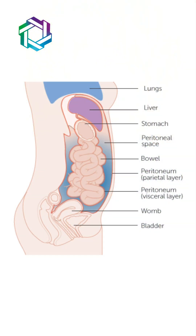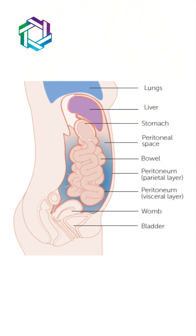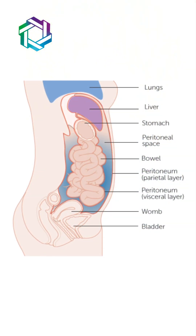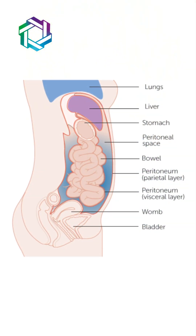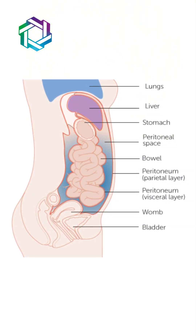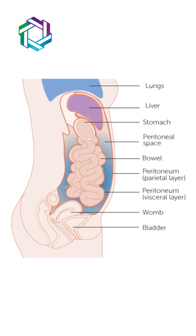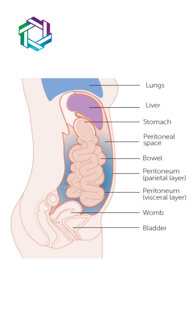If you look at the abdominal cavity, it is one whole cavity starting from the diaphragm to the pelvis, where all the organs are floating, covered by peritoneum and lubricated by peritoneal fluid.